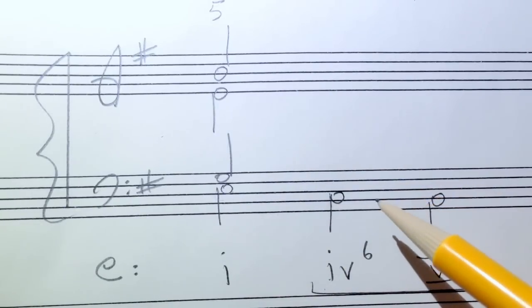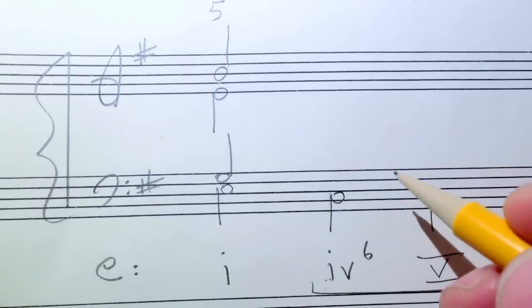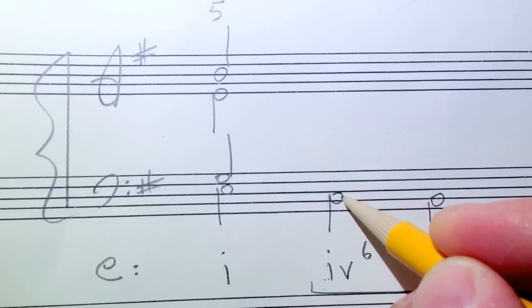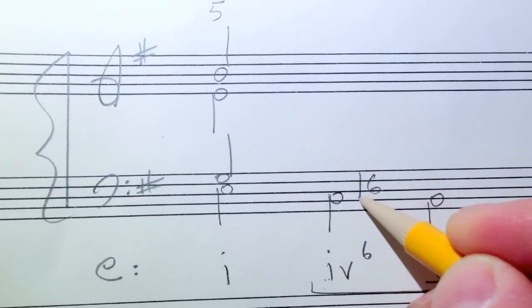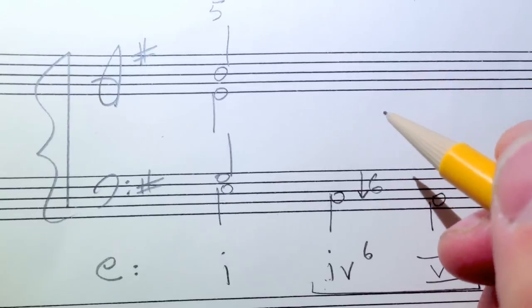Now the Phrygian cadence has a IV chord in first inversion, a IV six chord. So the notes of that chord are the notes of an A minor triad and the C sits in the bass, flat six, lowered six. So now those notes are going to be A, C, E.